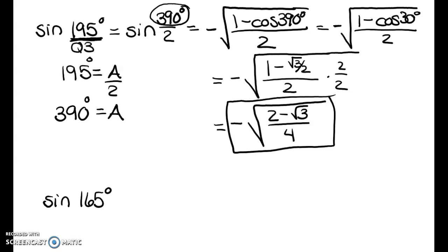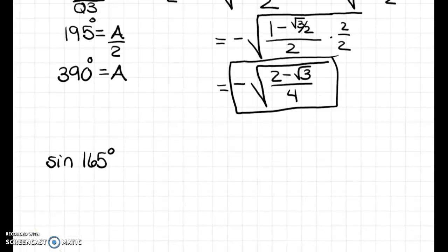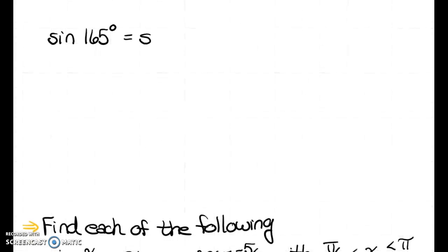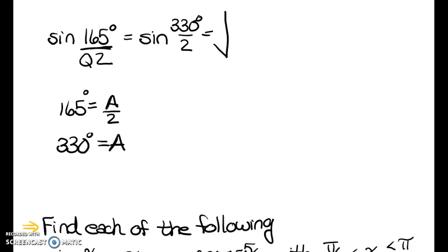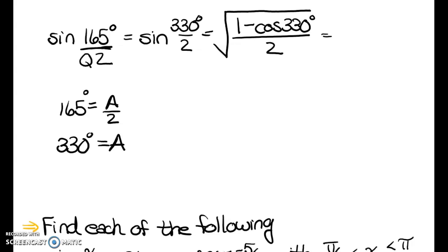Now sine of 165 degrees — let me make sure we haven't done this one. Set sine of 165 equal to sine of A/2, so A = 330 degrees. Now, where is 165 degrees? That's in quadrant 2, so I pick the positive version: positive √((1 − cos(330°)) / 2).